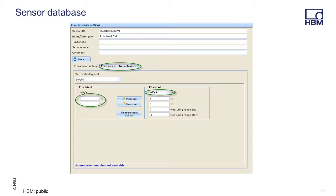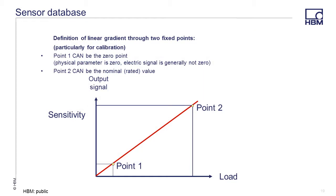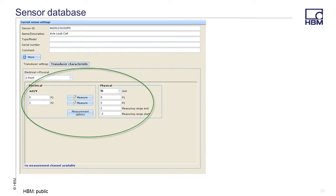Points one and two are used to define a linear gradient. Point one ideally would be your zero point, and point two would ideally be the nominal or rated value of your sensor, but they don't have to actually be those two endpoints. Since this sensor is a load cell, the desired engineering units are in pounds. Once the unit has been changed, the electrical and physical fields are editable. There are two measure buttons located next to the two electrical value fields. The measure buttons will take a measurement reading and place it in the electrical fields.